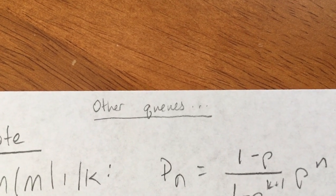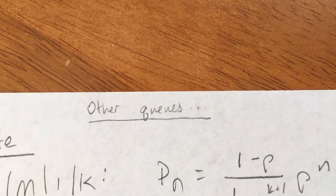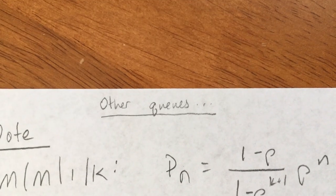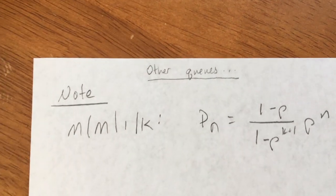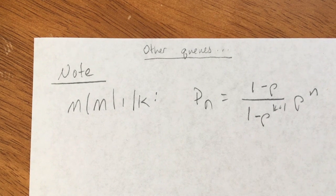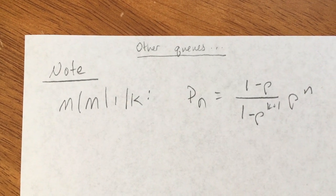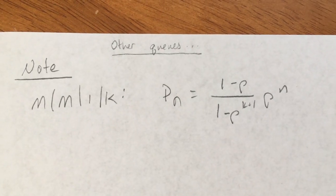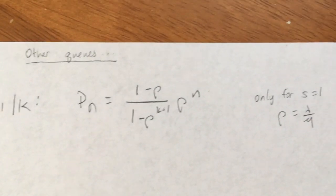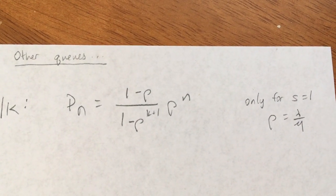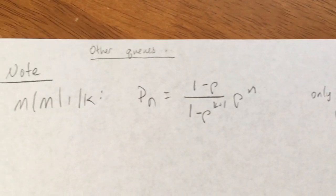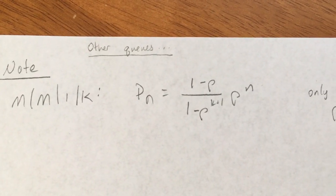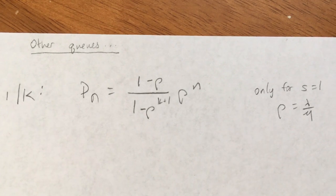Okay, queueing systems. We are into queueing system extensions. Before I get started with some of our different applications, I wanted to share a note: if you have an M/M/1/K queue, these equations only work for s equals 1. So you can use this when you have one server, but if you have more than one server, the equations are going to be different.